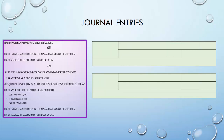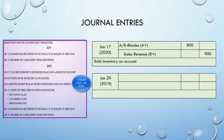Moving on to the 2020 entries: on January 17th we're going to sell $900 of inventory to Rick Rhodes on account. This journal entry is the same every time you make a sale on account — debit Accounts Receivable (here, AR–Rhodes) for $900 and credit Sales Revenue for $900.